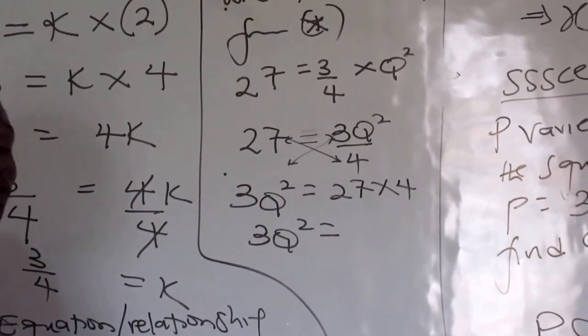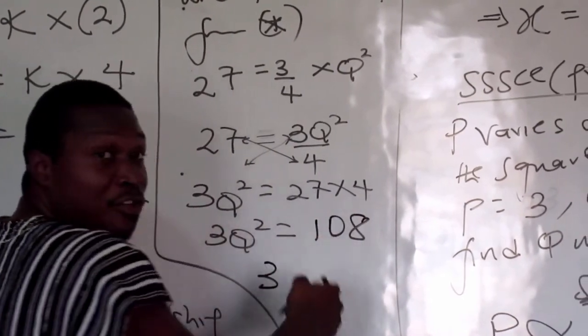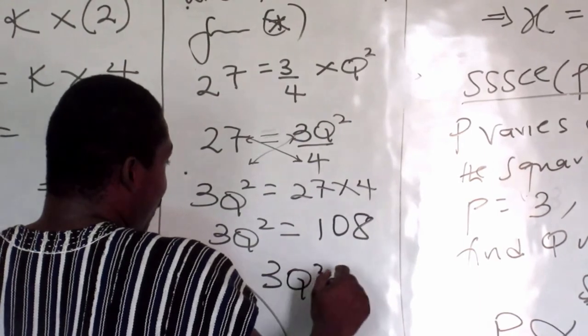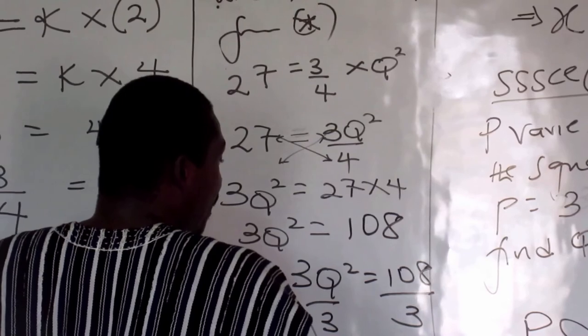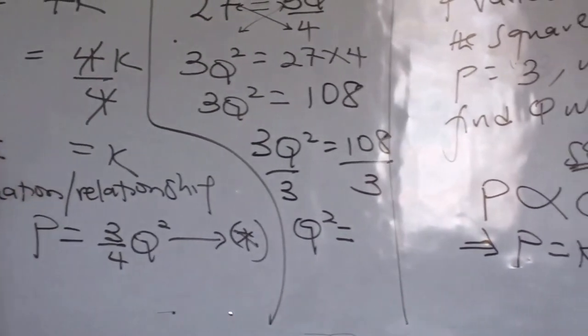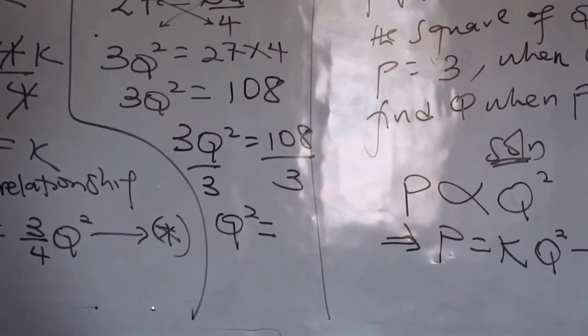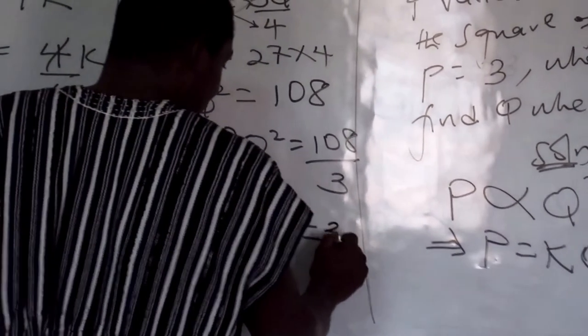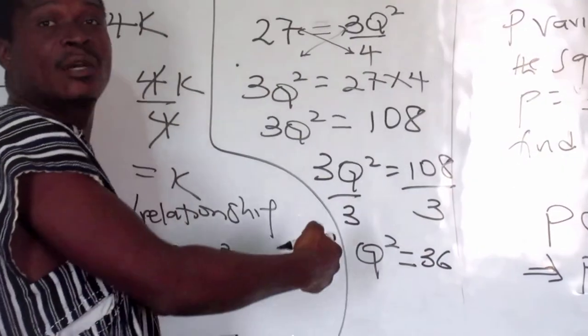It means I go with you, you also come here like that. So that's 3Q squared, that is 27 by 4. Now 3Q squared equals 27 by 4. What do you get? 108. Okay, I think your guess is right. That is 108.